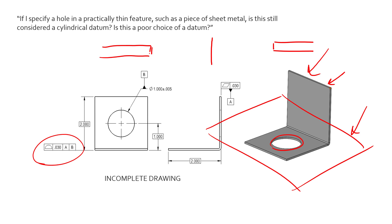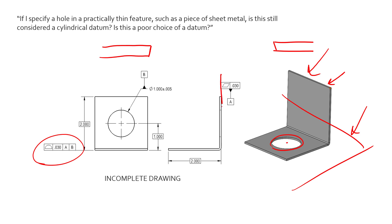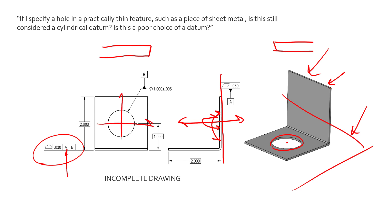Trying to get an axis that represents that hole is going to be near impossible. If it's laser-cut, there's probably going to be a little bit of taper or form error on it. So you would never want to try and get an axis based off the cylinder of this hole. What you would have to do instead is find a reliable way to get a center point — something that's going to stop that translation — because we've already held orientation by identifying this surface as datum plane A.